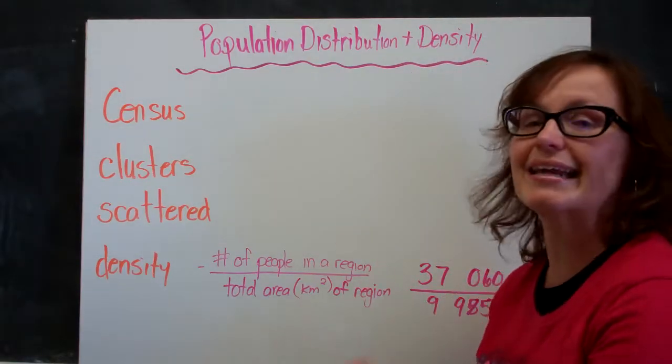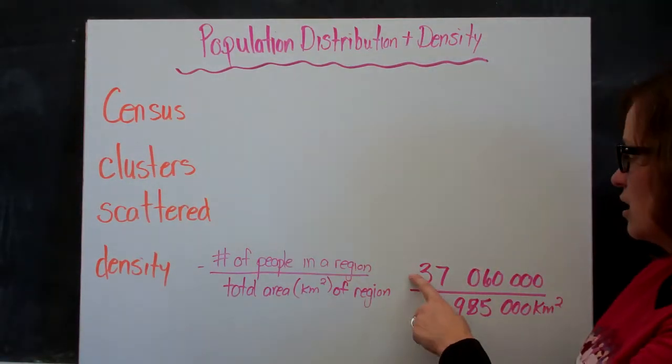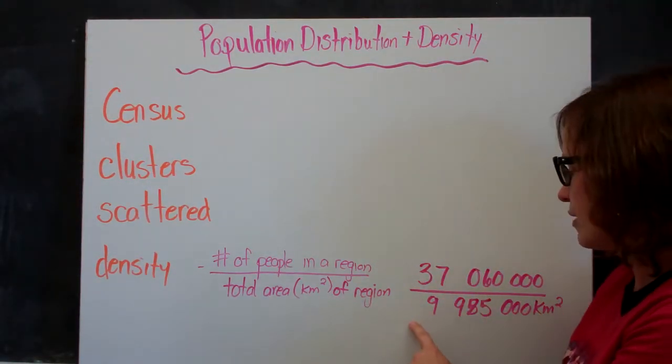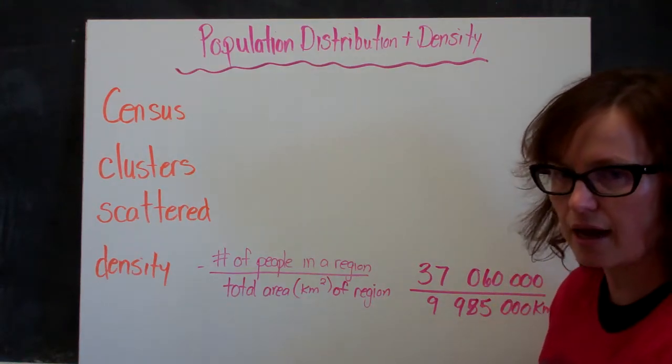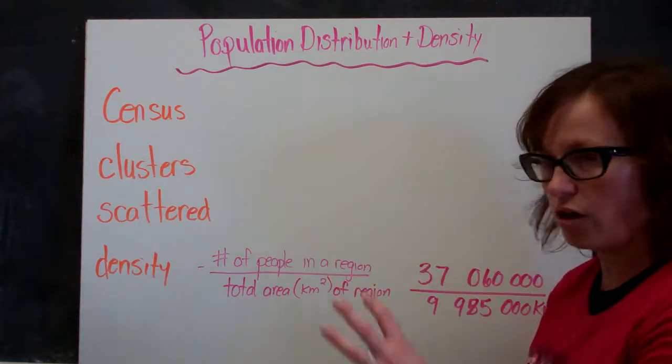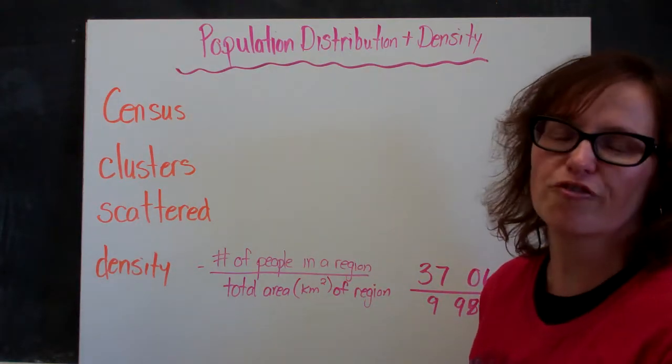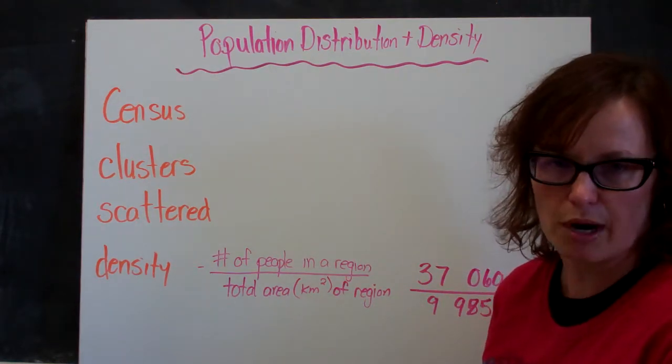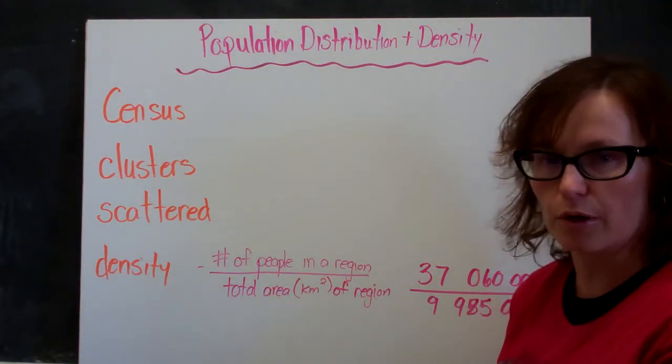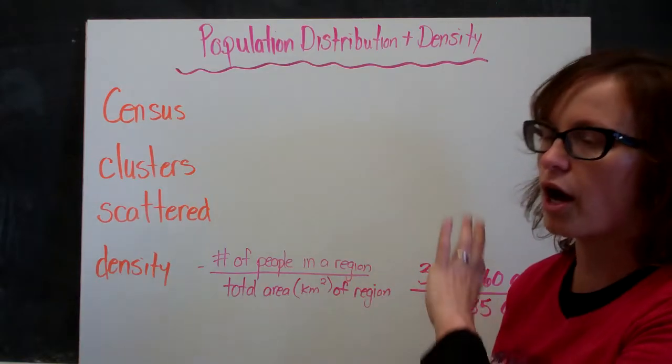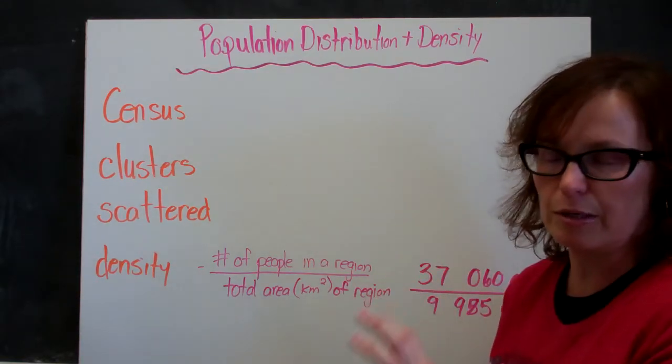For example, if we think about Canada as a whole and we take the population of Canada and divide it by the total kilometers squared, the area of all of Canada, it turns out to be about four people for every kilometer square, which is low density, which we consider a scattered population. There's a lot of area with not a lot of people.